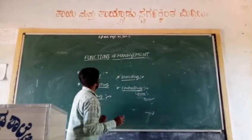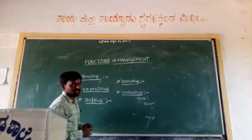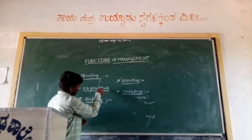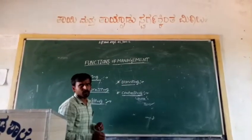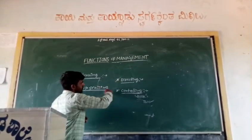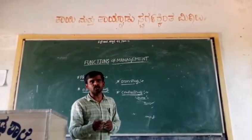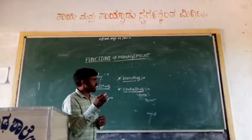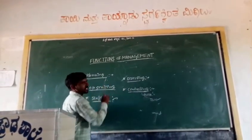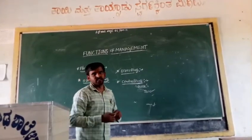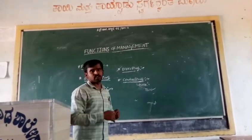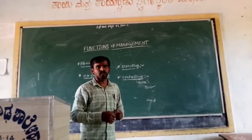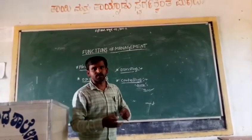That is about the functions of management. In any management, work starts with planning, followed by organizing, staffing, directing, and controlling. These steps are interrelated, so it is very difficult to say where one ends and the other begins. In the next class, we will continue with the coordination topic. Till then, stay home and keep learning. Thank you.